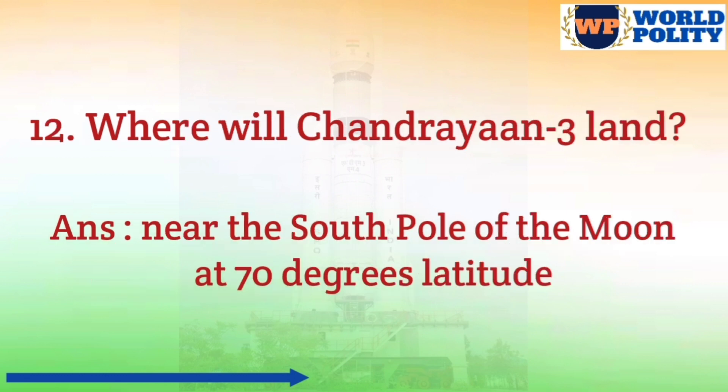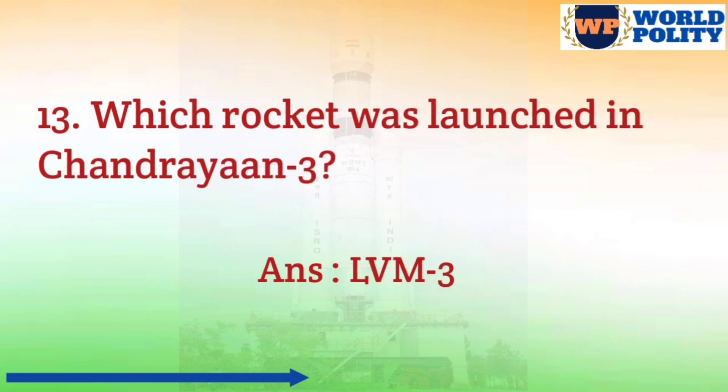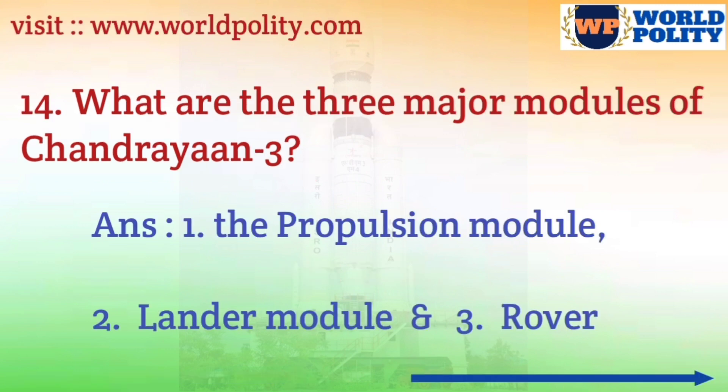Question number 12: where will Chandrayaan 3 land? The answer is near the south pole of the moon at 70 degrees latitude. Question number 13: which rocket was launched in Chandrayaan 3? The answer is LVM3. Question number 14: what are the three major modules of Chandrayaan 3? The answer is number 1, the Propulsion Module; number 2, the Lander Module; and number 3, the Rover.